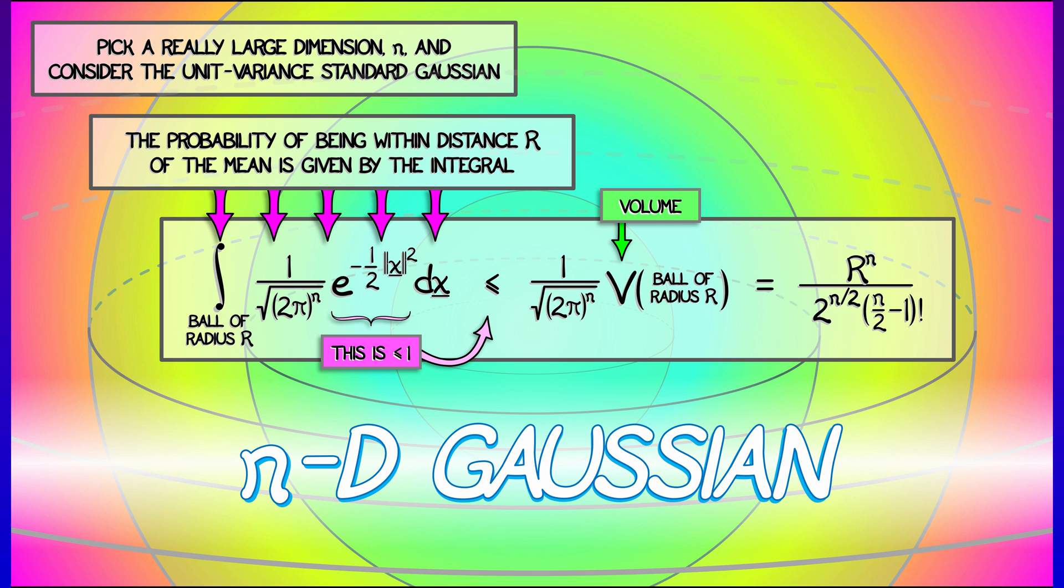Now that is an upper bound on the probability that picking a point at random in nd is within distance capital R of the mean. So what? Wait! Wait! For large n, this is really, really close to zero, because factorial always beats exponential.